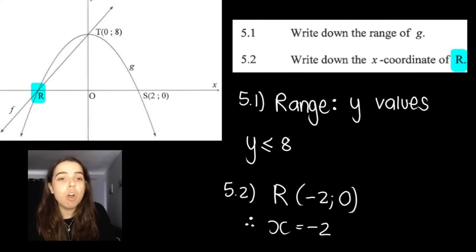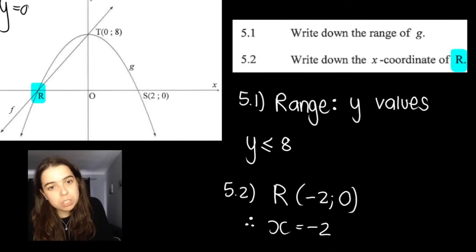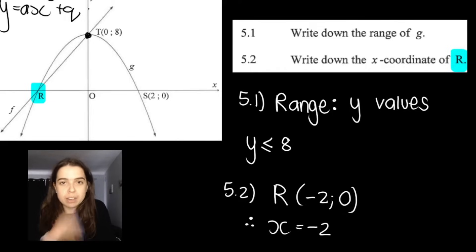Then they want the coordinate of r. We were told in the beginning that s and r are the x-intercepts of this parabola. It's where x equals 0 is also that line of symmetry for the parabola. So therefore my r-coordinate is negative 2 and 0 because s is 2 and 0.